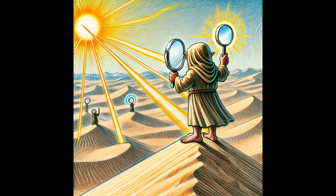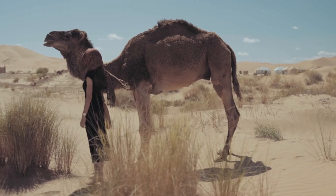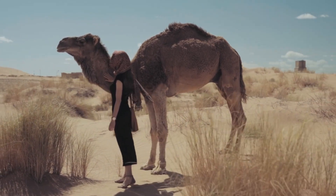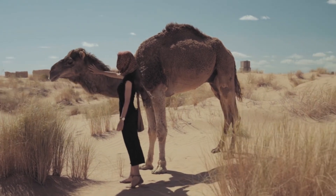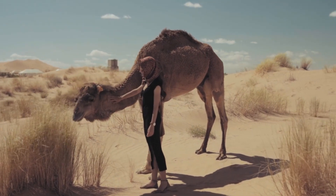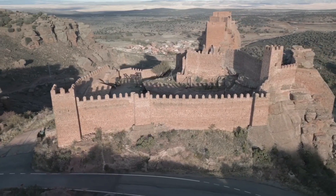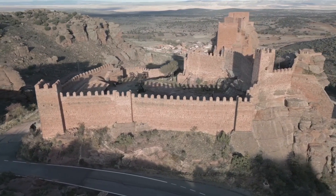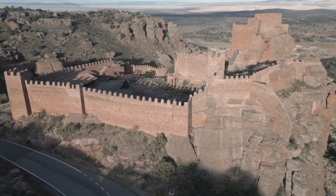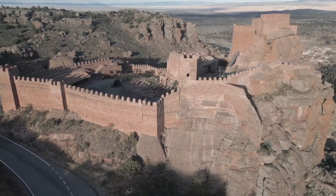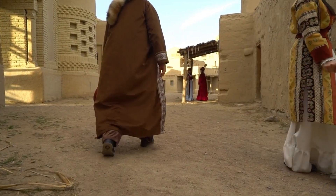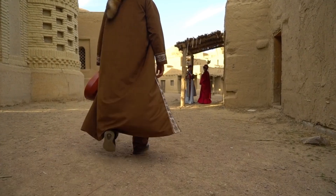Technology drives trade. In the Negev, advancements like the use of pack animals and road construction increased trade efficiency. For your world, consider what technological leaps — like the invention of certain vehicles or infrastructure — could spark new trade networks or increase the scale of existing ones. Certain cities or settlements located along trade routes can flourish unexpectedly, not because of local resources, but because of their strategic location as intermediaries for desert and maritime trade. These hubs can act as critical points for the exchange of goods, ideas, and cultures.